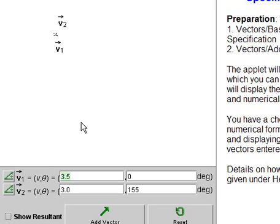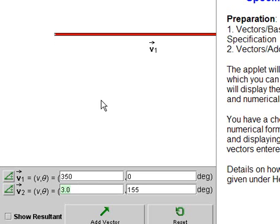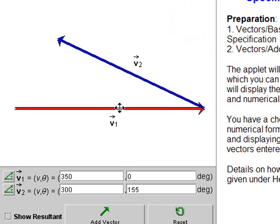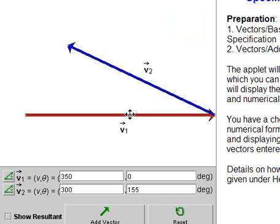The first one is 3.5 Newtons at an angle of 0 degrees. The second vector is 3.0 Newtons at an angle of 155 degrees. But when I do that, the vectors are showing up so small that I really can't see anything. So I'm going to put them back into 100s. I'm going to have 350 Newtons and 300 Newtons, but I have to remember later to divide these numbers by 100. Remember, this is actually 3.5 Newtons and this is 3.0 Newtons.